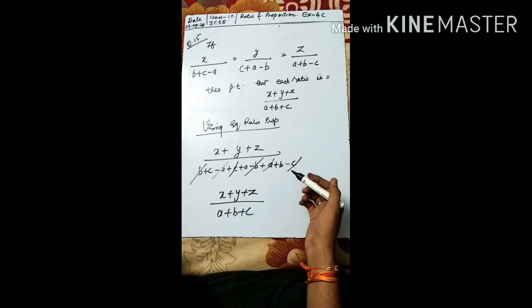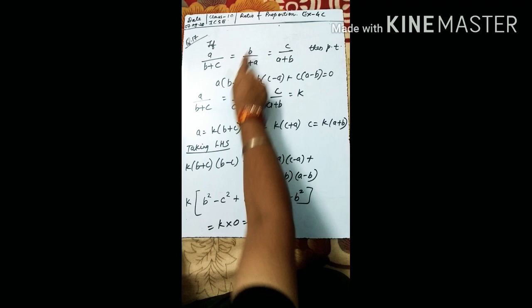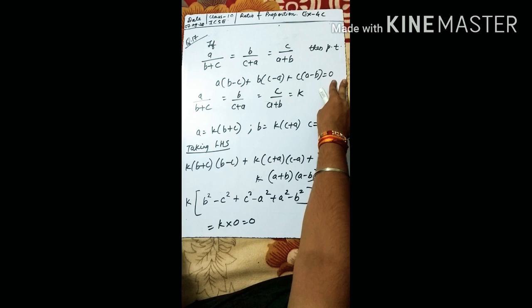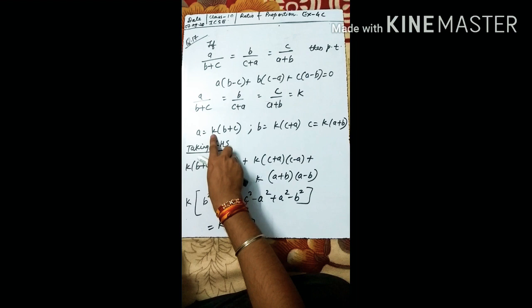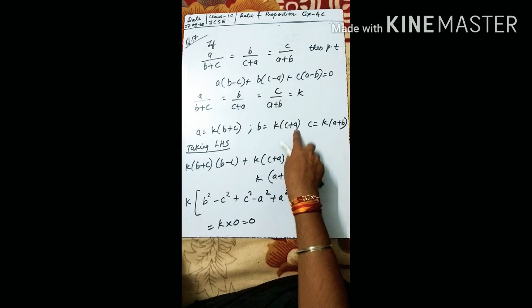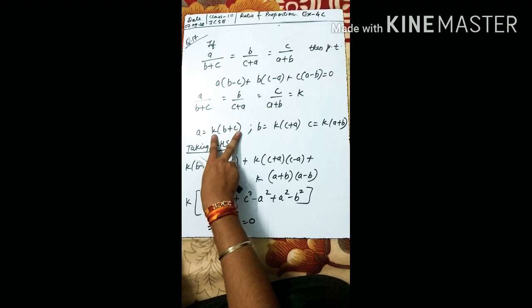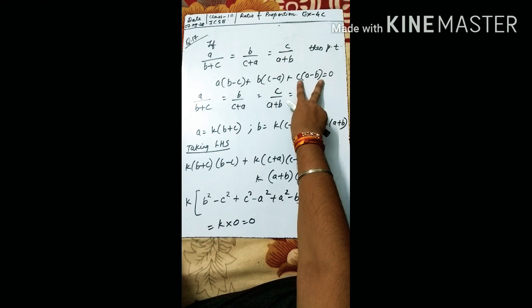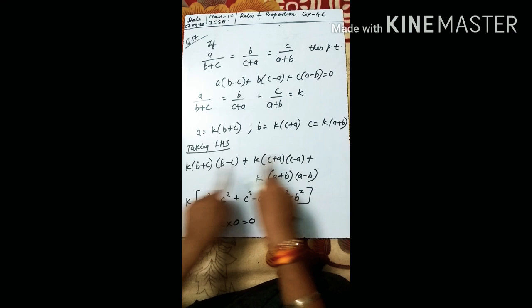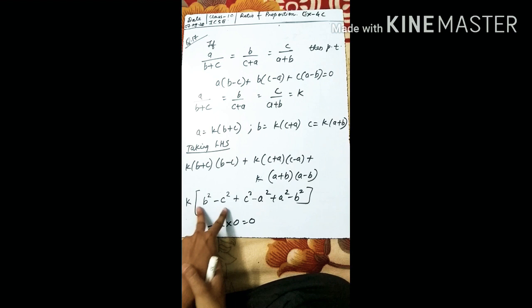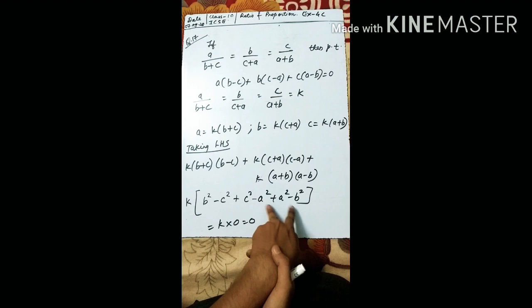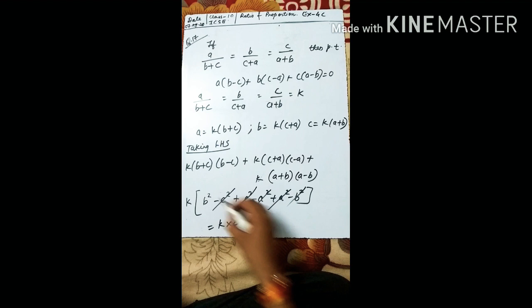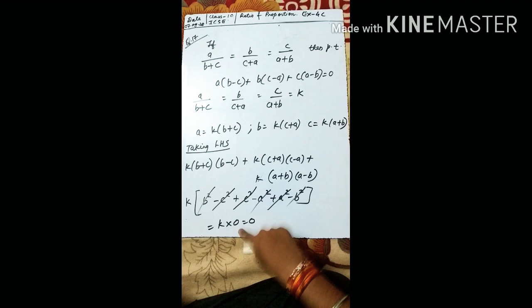The 16th question: given a/(b+c) = b/(c+a) = c/(a+b) = k, prove that the expression equals zero. So a = k(b+c), b = k(c+a), c = k(a+b). Taking LHS, substitute: k(b+c)(b-c) + k(c+a)(c-a) + k(a+b)(a-b). Take k common. Using the identity (b+c)(b-c) = b²-c², we get k[(b²-c²) + (c²-a²) + (a²-b²)]. All terms cancel: k × 0 = 0. Hence proved.